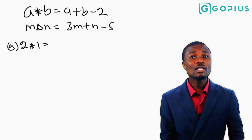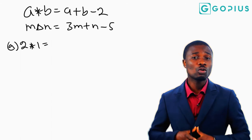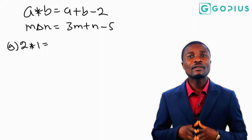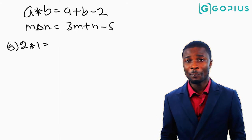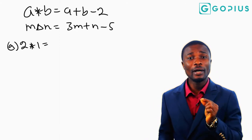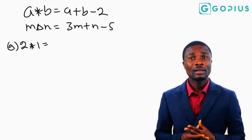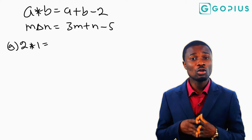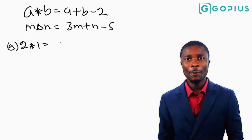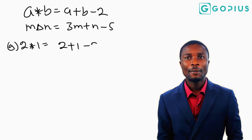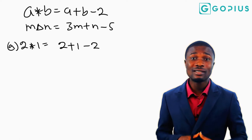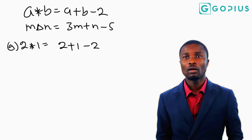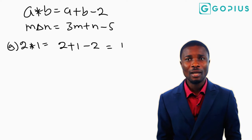For 2 star 1, we are using the star binary operation. Our 2 is now a and our 1 is now b. The operation was defined as a plus b minus 2. So 2 star 1 gives us 2 plus 1 minus 2. That is 3 minus 2, which equals 1.